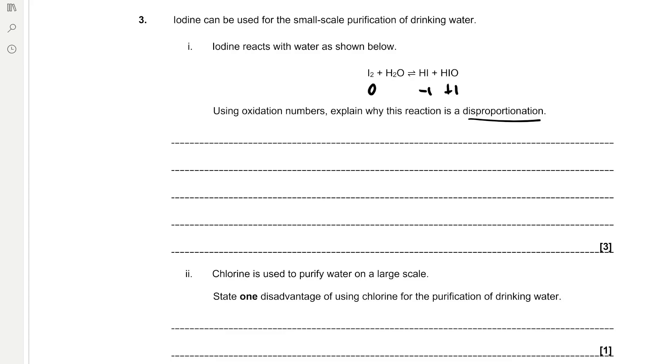So we can say that this reaction is disproportionation because iodine is both oxidized from 0 in I2 to +1 in HIO and reduced from 0 in I2 to -1 in HI.